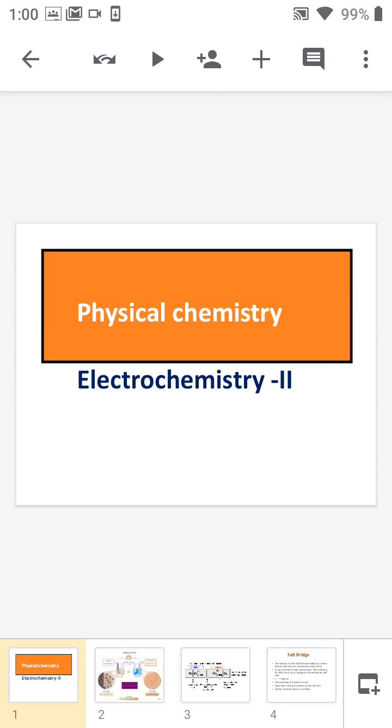So in this chapter, we are discussing the electrochemical cell. Electrochemical cell means electricity is produced as a result of a spontaneous redox reaction, and this type of cell is known as a galvanic cell or voltaic cell.